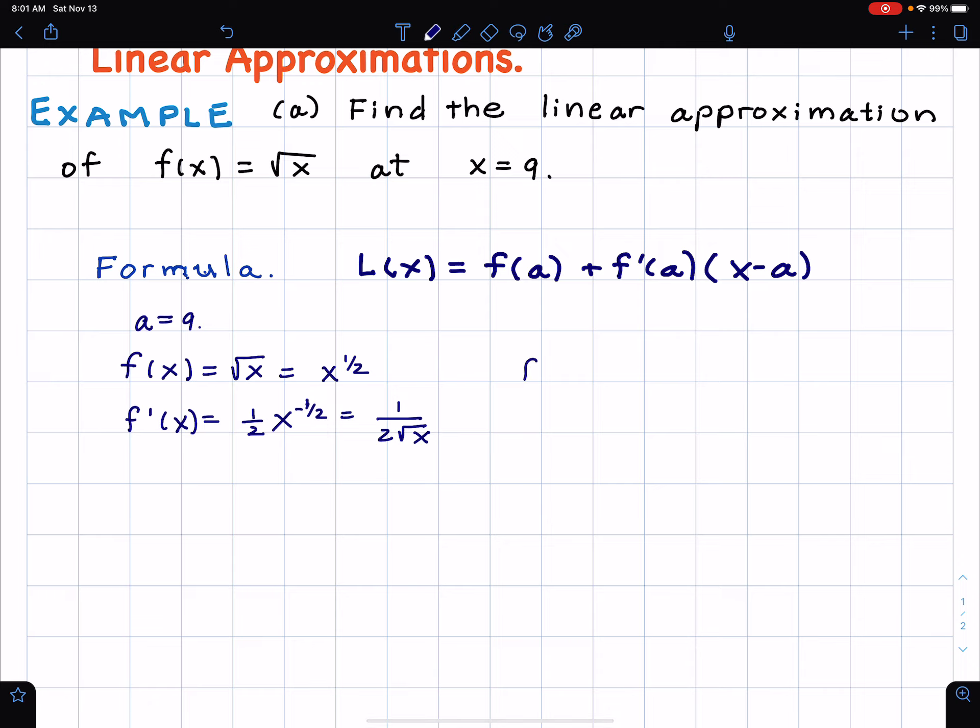So this becomes, this is equal to one over two radical x. So then we also have that a is equal to nine. And so f of a would be f of nine, or is f of nine. That's square root of nine. And then f prime of nine is equal to one over two square root of nine. So that's one over two times three, and that's one sixth.